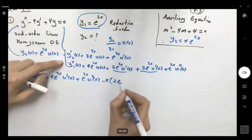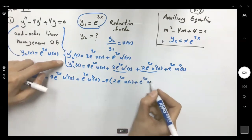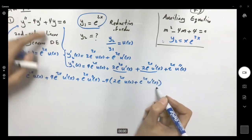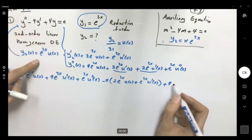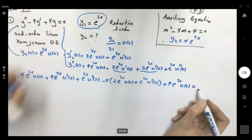The derivative is 2 e to 2x u of x plus e to 2x u prime of x and you have plus 4 y which is e to 2x u of x. On the right hand side we have is 0.